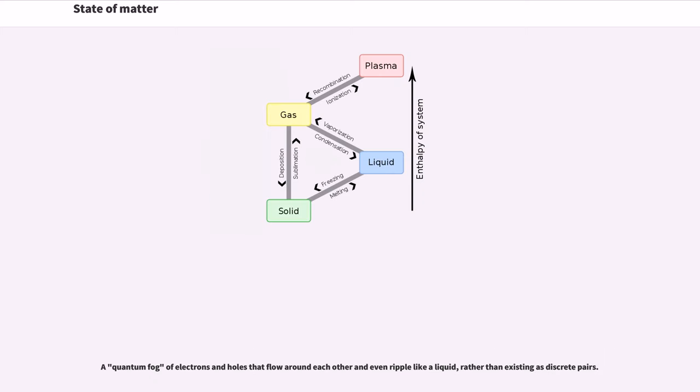A quantum fog of electrons and holes that flow around each other and even ripple like a liquid, rather than existing as discrete pairs.